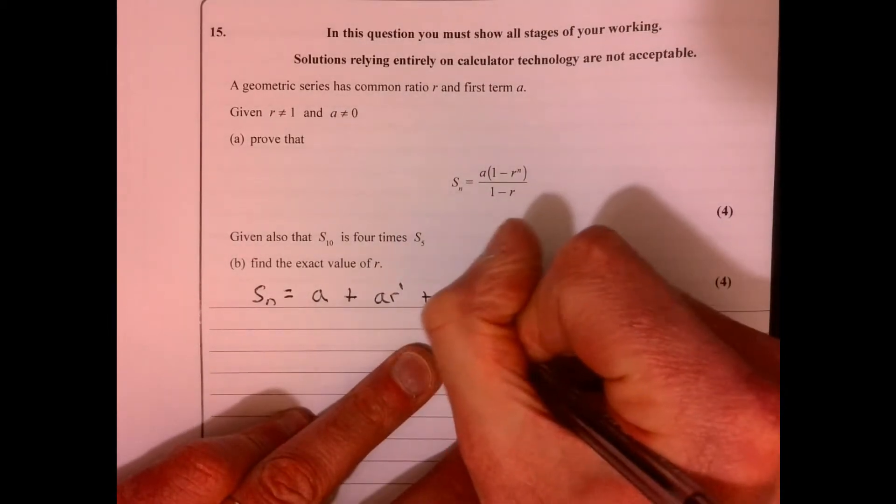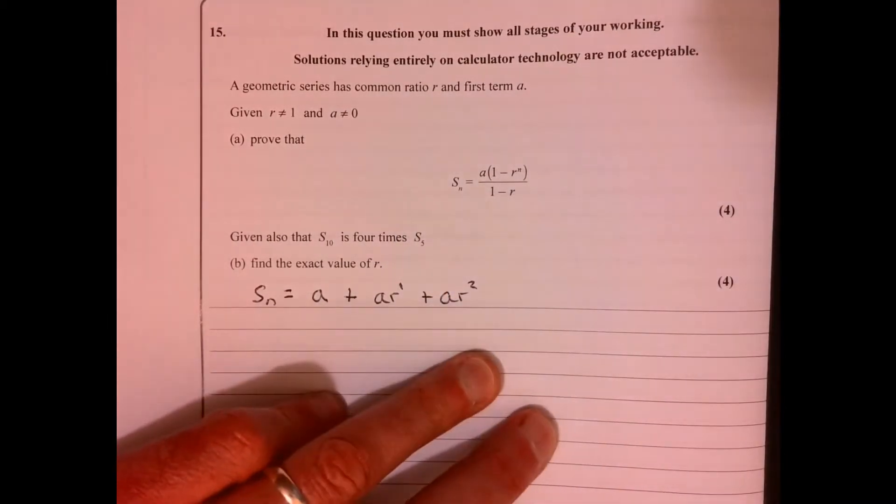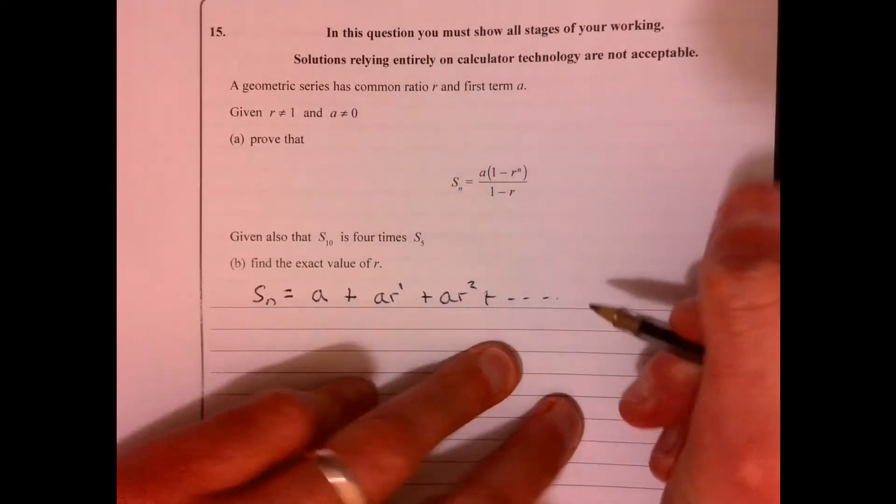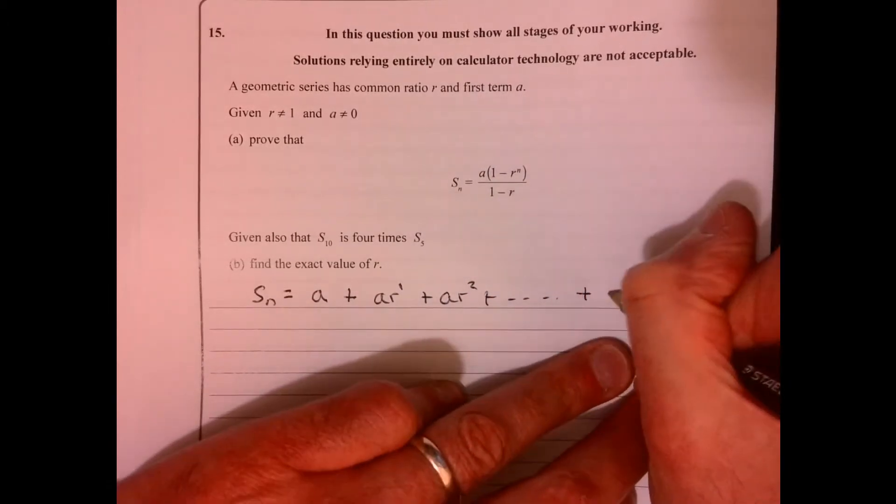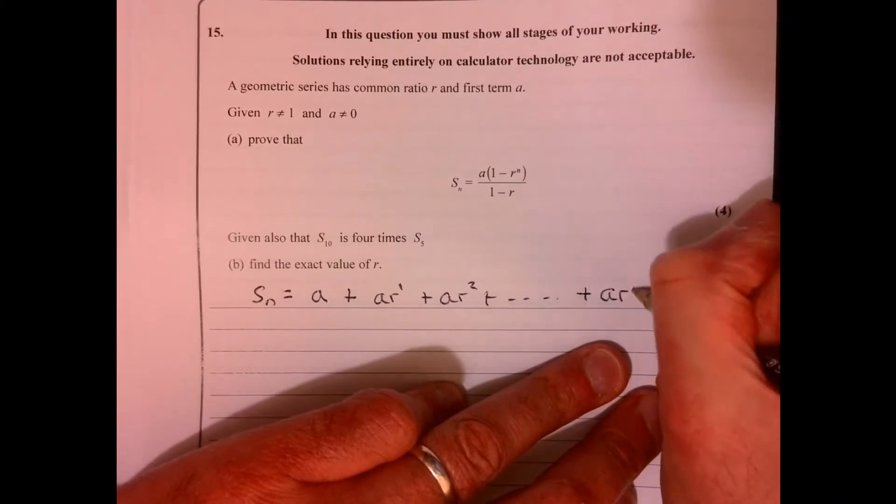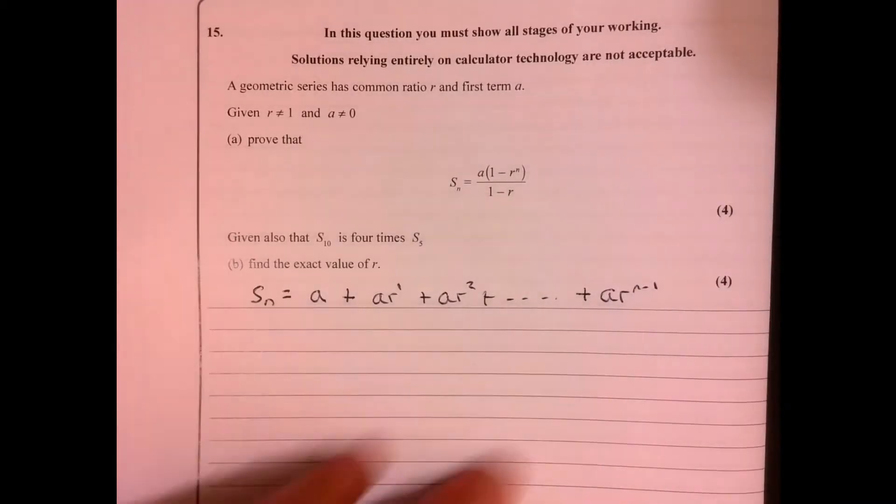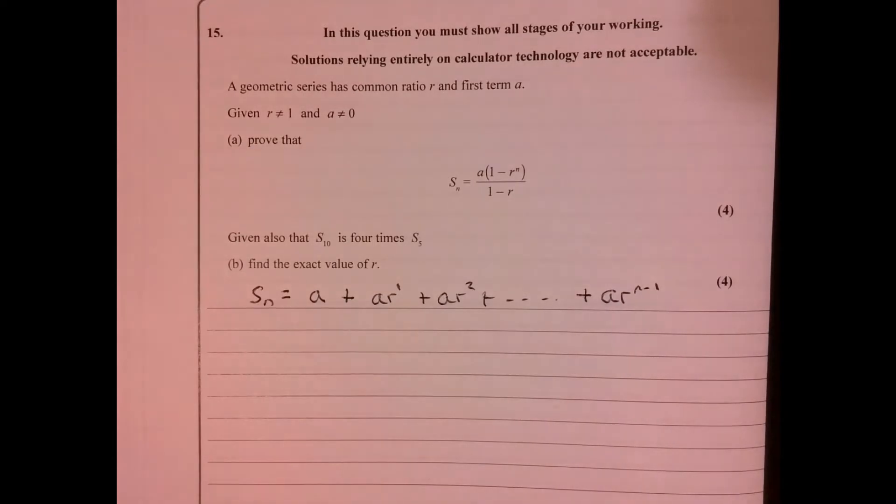and then you'd add the next one, times r squared, and so on. Okay, and then you'd end up with the last one, that should be a times r to the n minus 1.